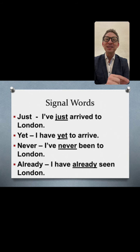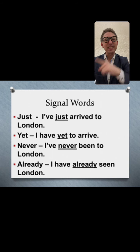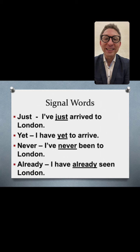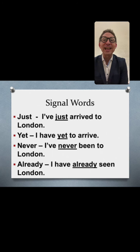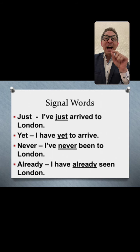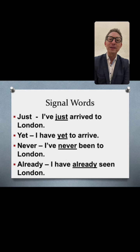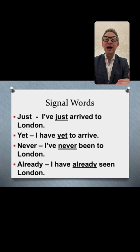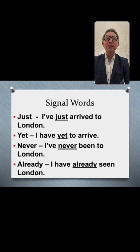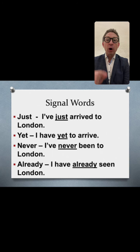'I've just arrived to London' means I arrived this morning or last night. 'I have not yet arrived' — yet is used often with present perfect. 'I've never been to London' — never is often associated with present perfect. 'I've already seen London' — already is another clue that you must use present perfect.